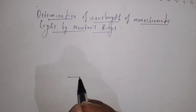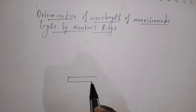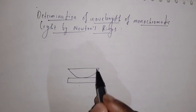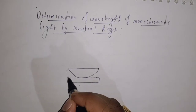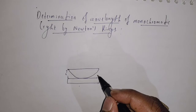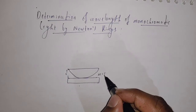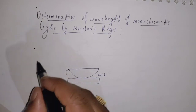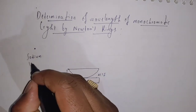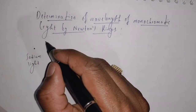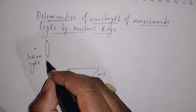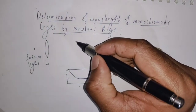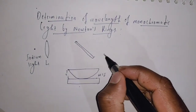The setup consists of a glass plate, above which a plano-convex lens is placed. A wedge-shaped air film is formed with thickness t and refractive index mu equal to 1, because it is an air film. A monochromatic source — here we are using sodium light — is used.